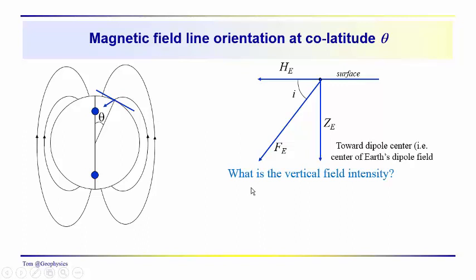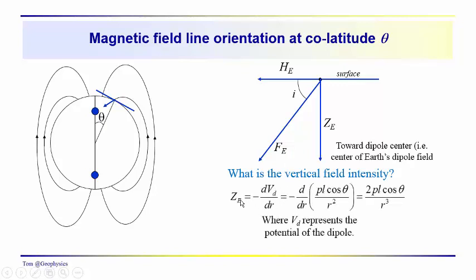You might ask yourself: what is the vertical field intensity? Z sub B — we've already calculated this, basically, in the preceding slide. We just took the derivative of the potential with respect to R, and we get two PL, or two times the dipole moment, times the cosine of theta over R cubed. That is the radial component — that's the vertical field intensity.